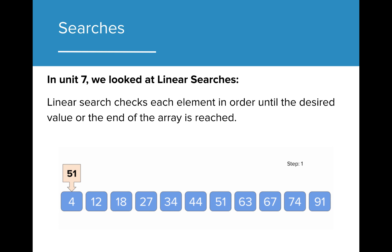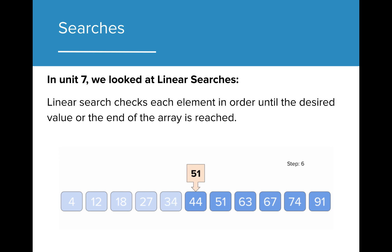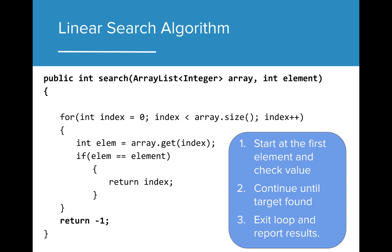Think back to Unit 7, where we looked at linear searches. We found that linear searches would check each element in order until we got to the specific item that we were looking for. Our solution to that problem involved a for loop, where we searched until that value was found. This process could be inefficient if we had a large list to look through.